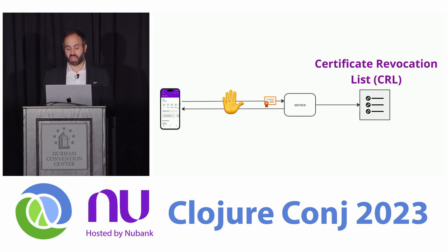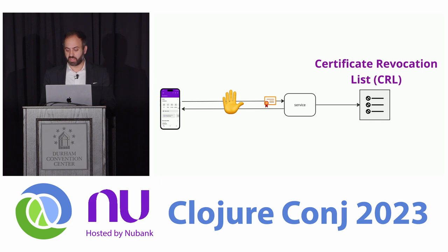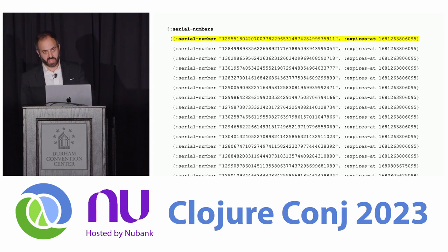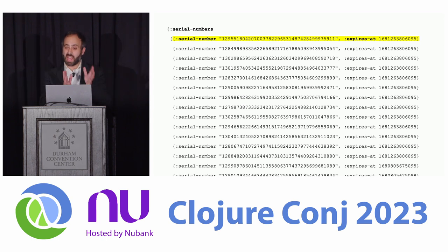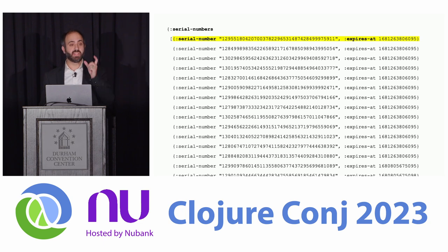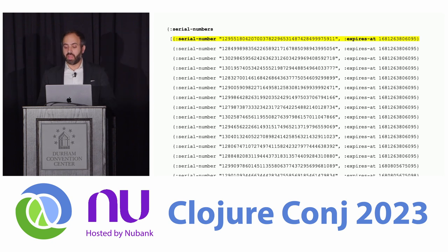It happens billions of times a day. It has to be fast. It has to be robust. So what does this list look like? Here's a picture of how it's represented in a snapshot on S3. Every certificate has a serial number on it, and the serial number is essentially the identity for the certificate. So it's a big pile of unorganized Eden sitting on S3.